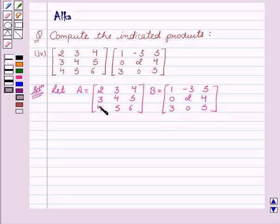Now, we have to find the product of A and B. Therefore, it can be written as AB equal to 2, 3, 4, 3, 4, 5, 4, 5, 6.